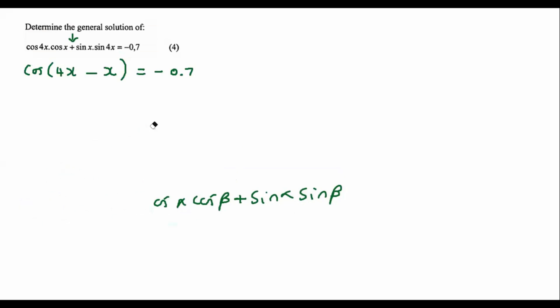I'm just using compound angles from our formula sheet. Now I can easily simplify as cos of 3x equals negative 0.7. And now, all of a sudden, we have a general solution question.